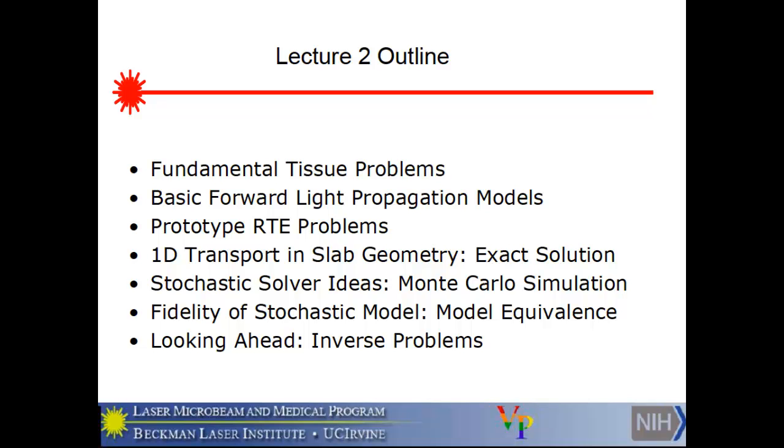But first I'll talk about the two major categories of tissue problems, some basic light propagation models, prototype problems. By this I mean standard ones that require measurements and, you know, what sort of output. Vasen already told you collect light, maybe internal, or you collect light at the surface, depending on whether you're doing therapeutics or diagnostics.